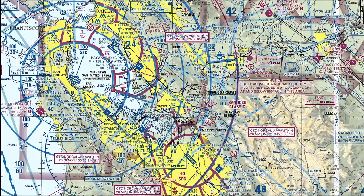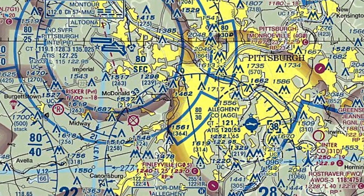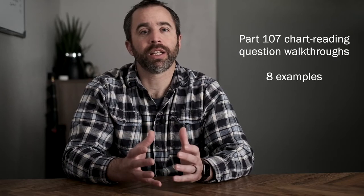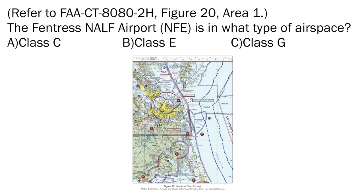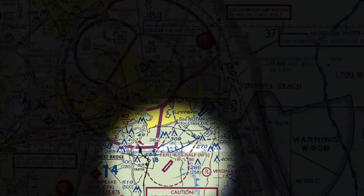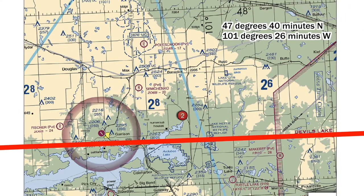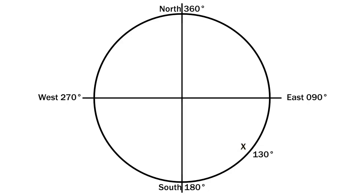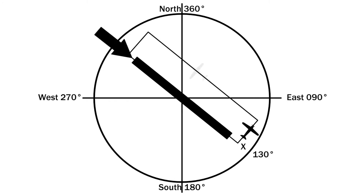The first resource is for sectional charts and runway information. This stuff is really complex, and I loved John Peltier's video, 'FAA Part 107 Chart Reading Question Walkthrough.' He teaches you how to read sectional charts and runway information as he goes through real sample questions. He's very calm and clear, with simple graphics that are super helpful in learning how to read these complex charts. After watching his video, I got every sectional chart question right on all practice tests going forward.